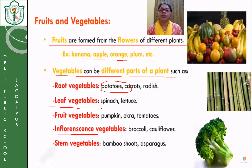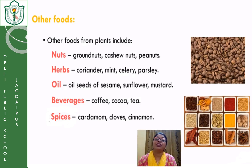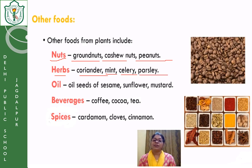Copy down these things in your notebook. Other than cereals, fruits, and vegetables, plants are also very beneficial — they give different types of food included in our diet. First is nuts: groundnut, cashew, peanuts. Then herbs: we include herbs like coriander, mint, celery, and parsley. These herbs are added to food items to make them a little more tasty, and they are not only making food tasty — they also have nutritive value.